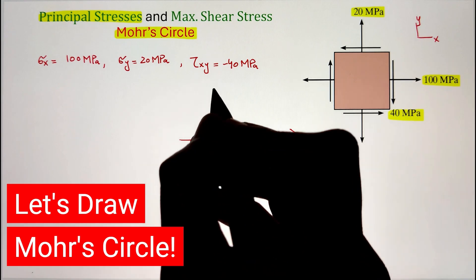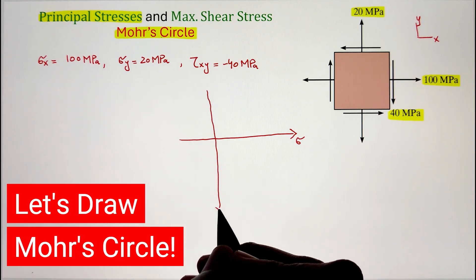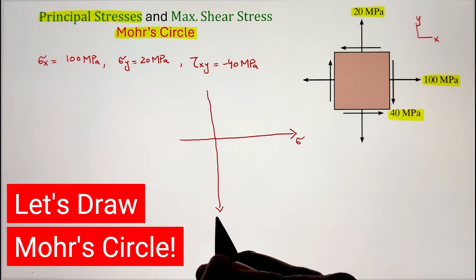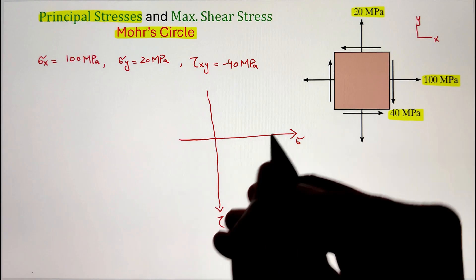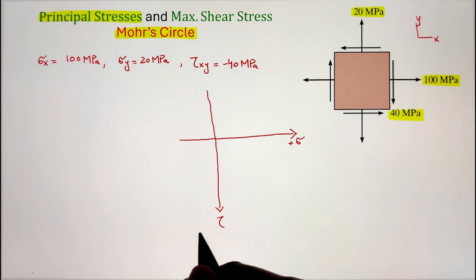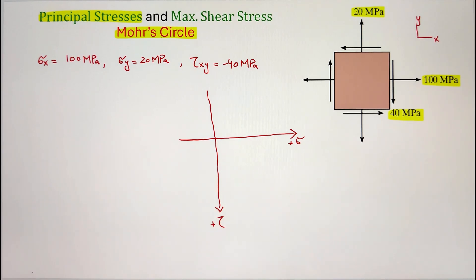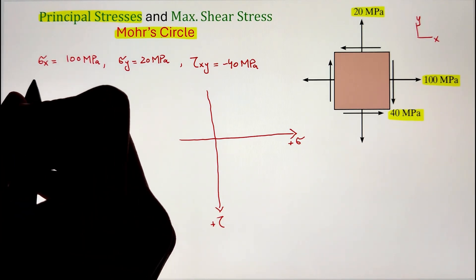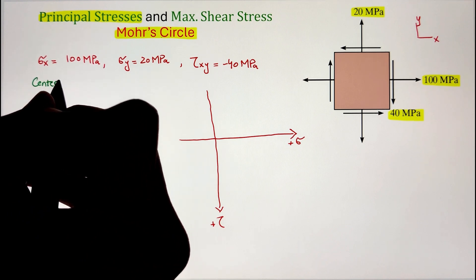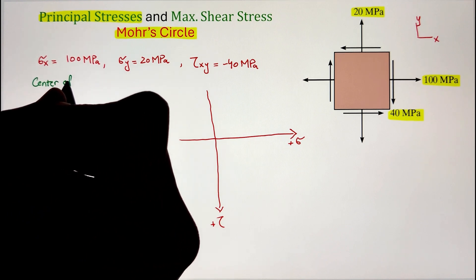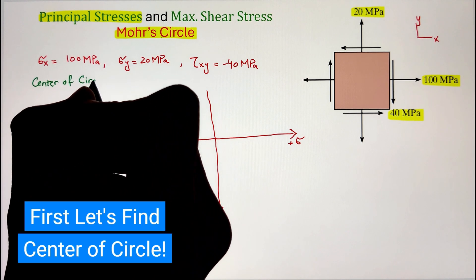Let's go ahead and plot our axes for the circle. Our horizontal axis is the normal stress sigma, taken as positive to the right, whereas the vertical axis is shear stress, taken as positive downward.